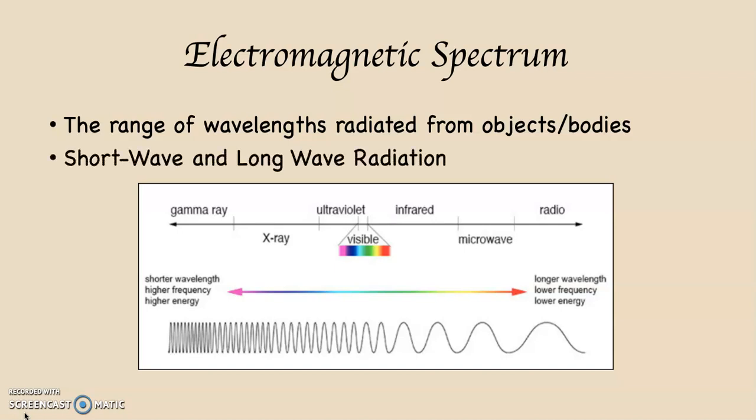If you take a look at this diagram, you can see that there's both short and longwave radiation presented on it. At the bottom of the diagram, as you go to the left, you can see the wavelengths are getting tighter and closer together. That's shortwave radiation. As you go to the right, the wavelengths are spreading out. That's longwave radiation. At the top of the diagram, you can see gamma rays, x-rays, ultraviolet light, visible light, which is what we as human beings are capable of seeing, infrared light, microwaves, and radio waves.